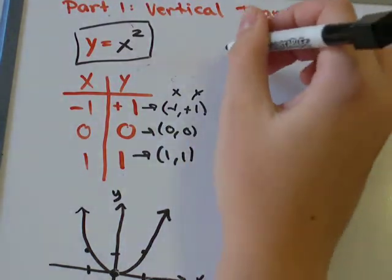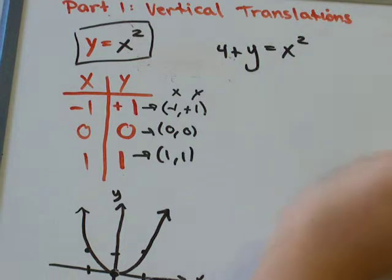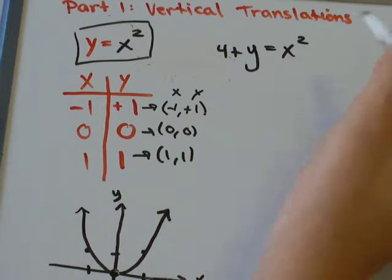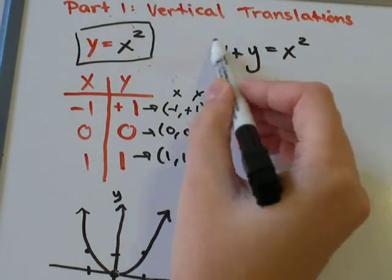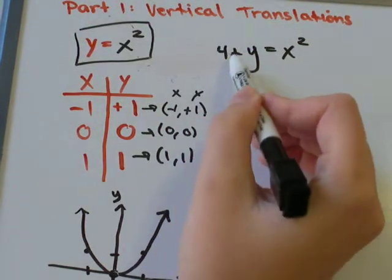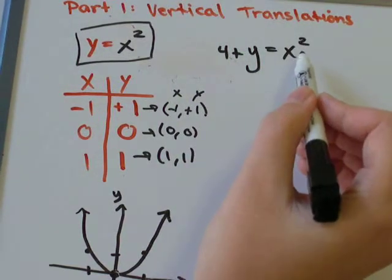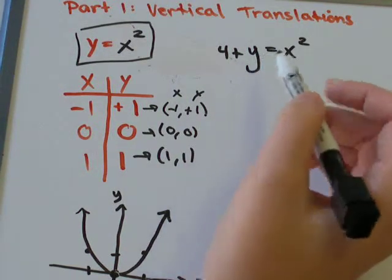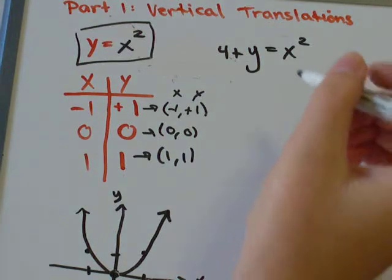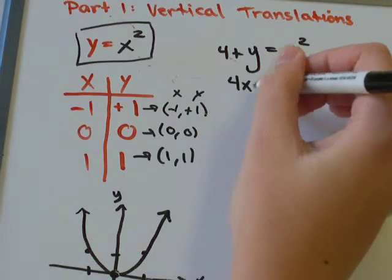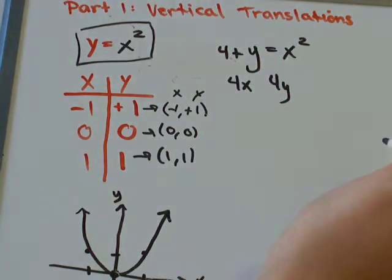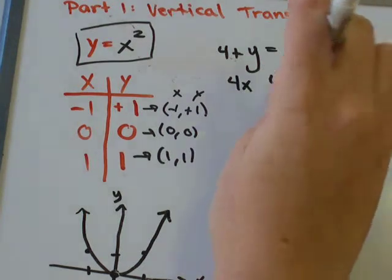So, if I was to say 4 plus y equals x squared, that would be a graph with a vertical translation, because I've added a number that is just a constant, right? It's not associated with the x variable. It's not associated with the y variable. And what I mean by that is, I didn't add on 4x or 4y. I just added on 4 by itself.